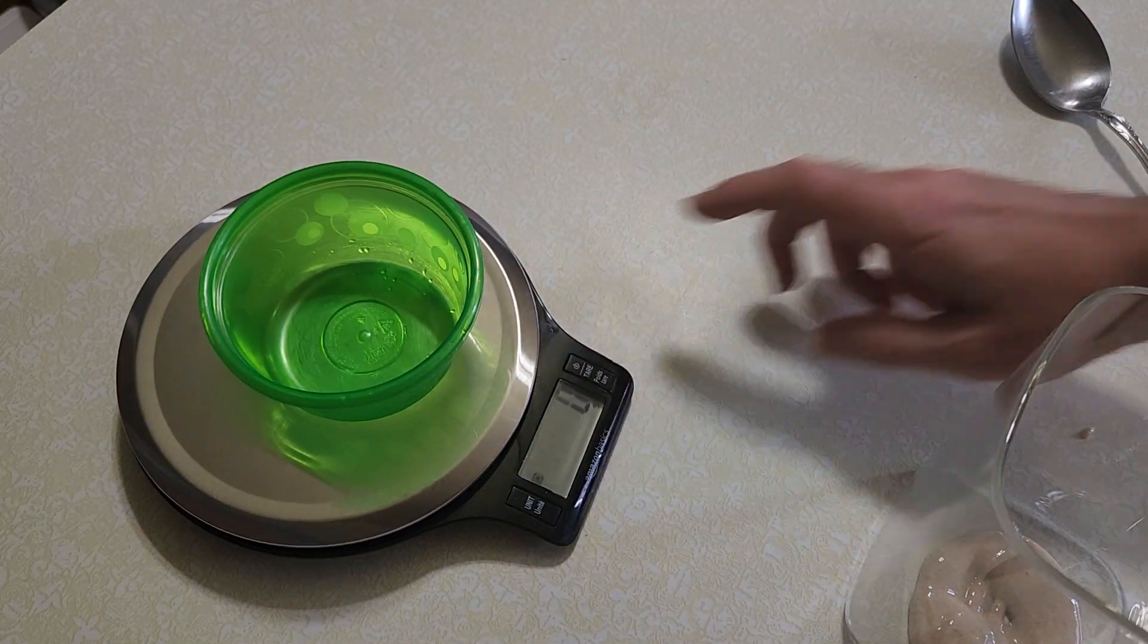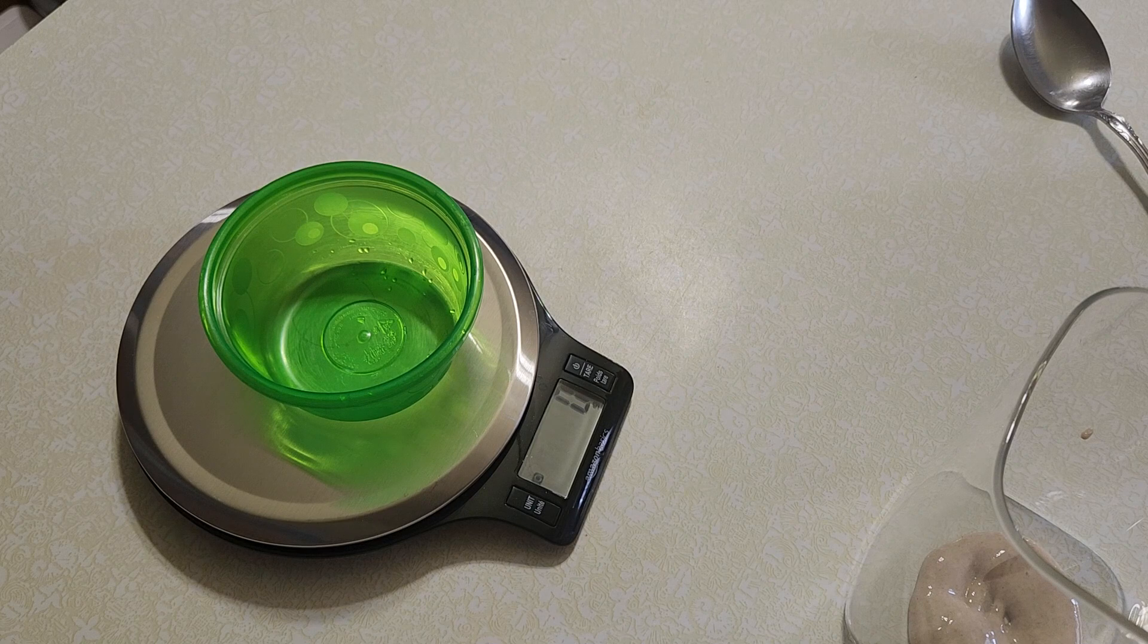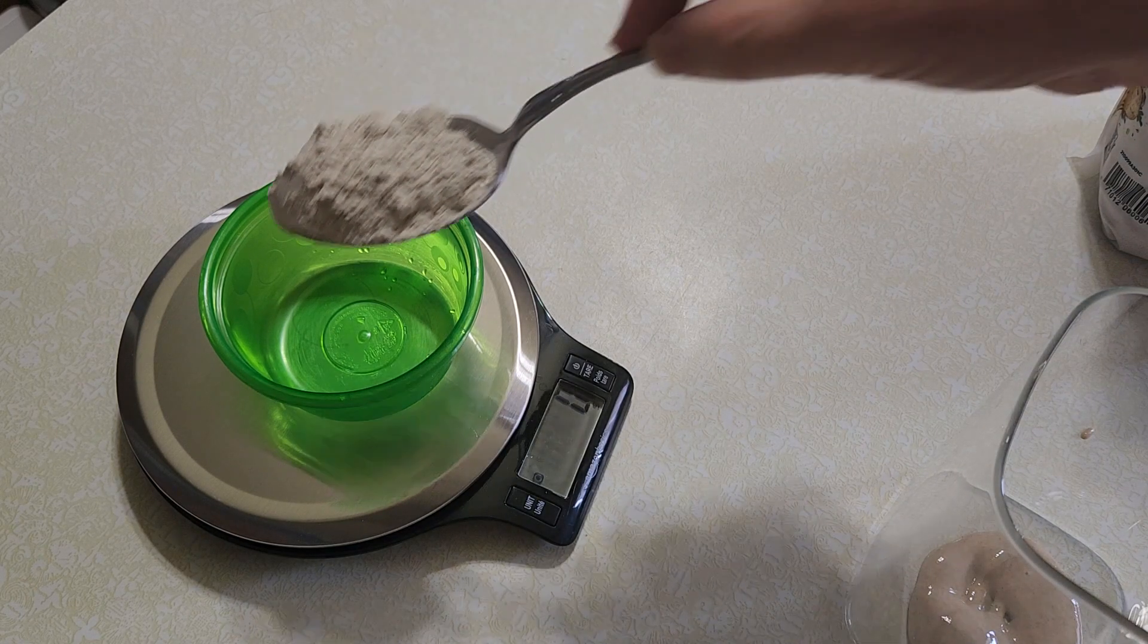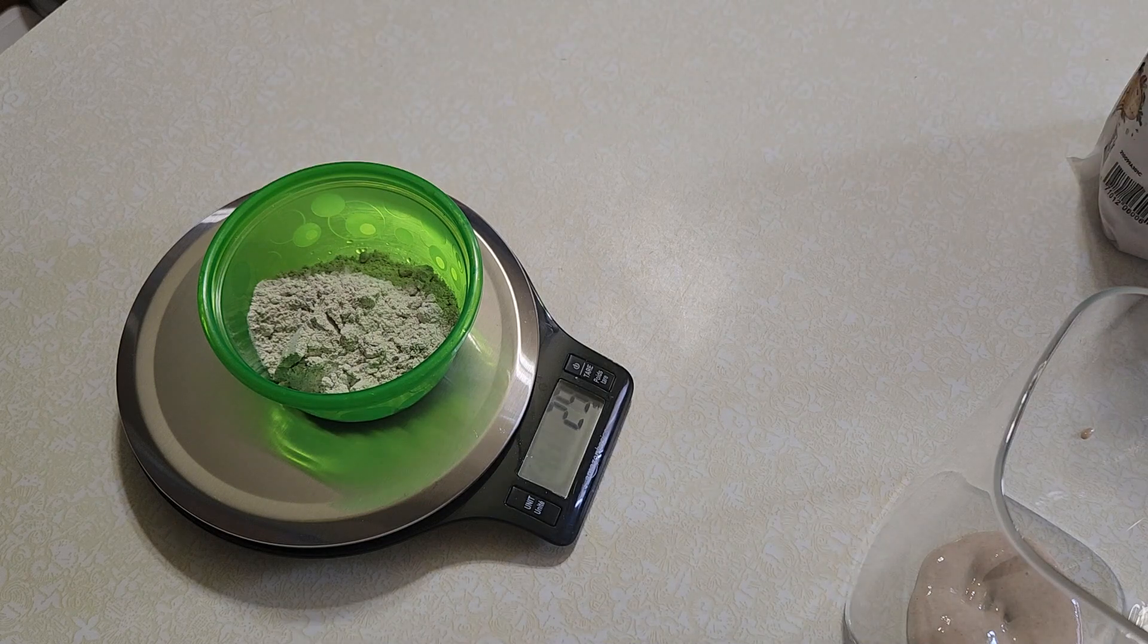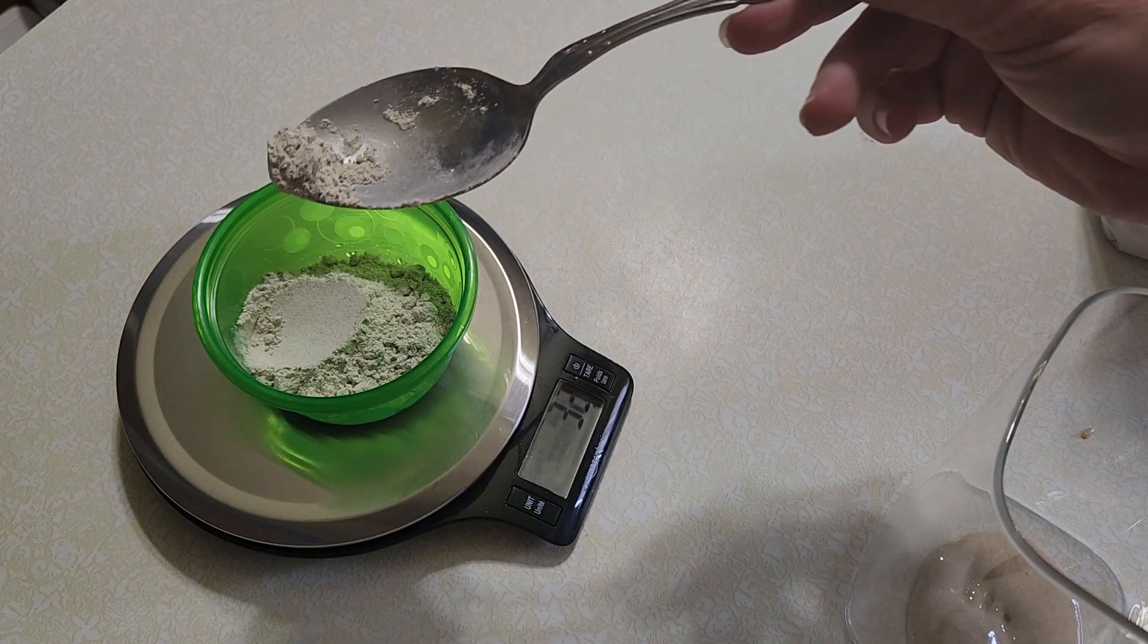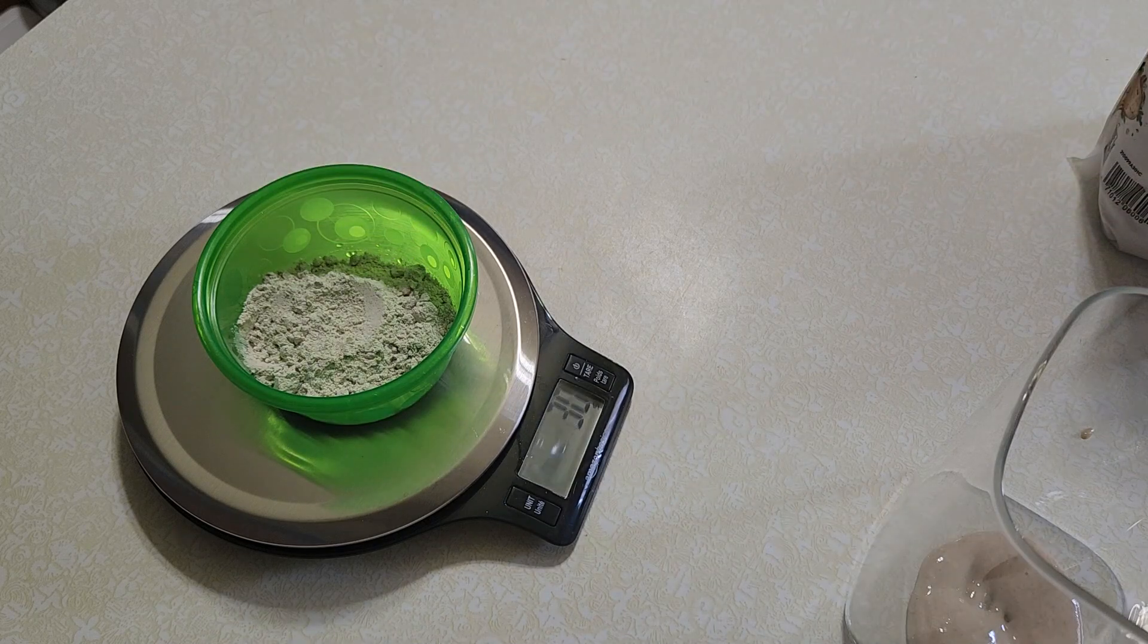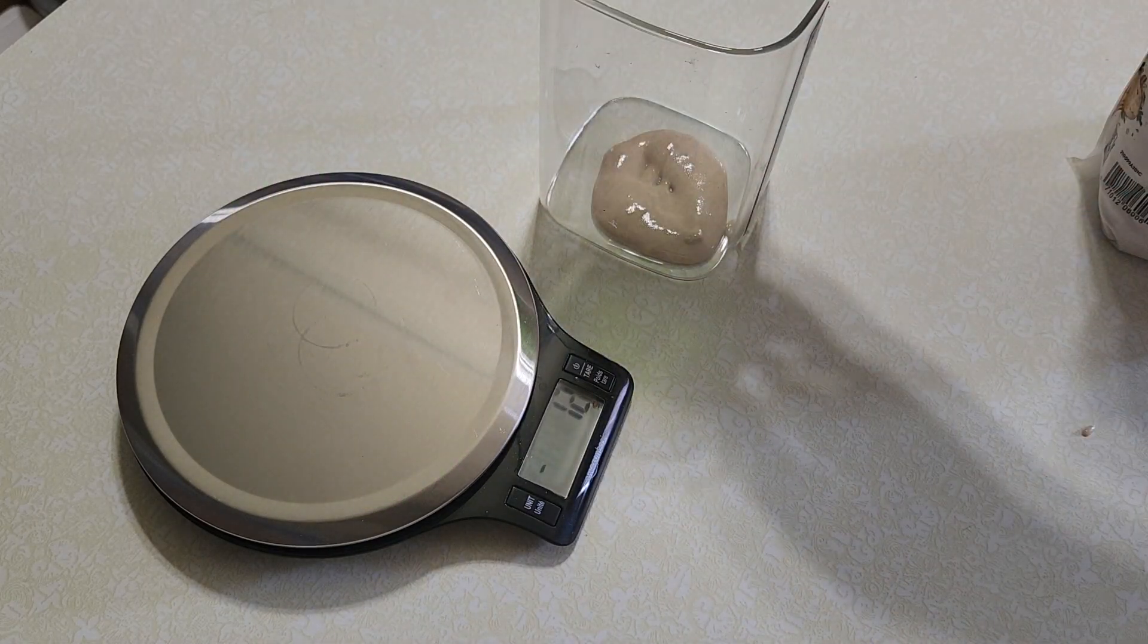Let's go ahead and take this off. Now we need to tare this to zero. We need 30 grams of rye flour. 22, 29. Well, make up your mind. There we go, we got 30 grams of rye flour. We're going to go ahead and dump that in there.